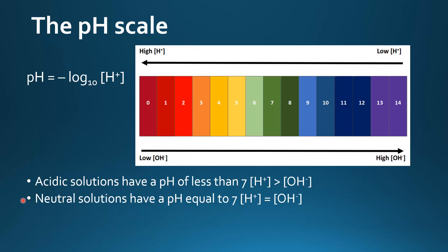Neutral solutions have a pH equal to 7. That's when the concentration of hydrogen ions equals the concentration of hydroxide ions.